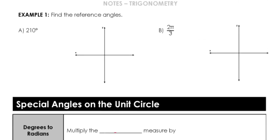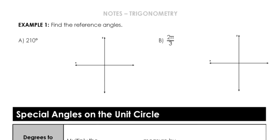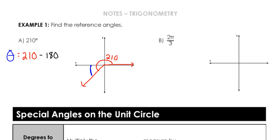Let's practice finding those reference angles. In example one, we find the reference angle for 210 degrees. 210 degrees in standard position starts there, goes past 180 to 210 degrees — there's my initial angle. To find the reference angle, which is how far it is from that negative x-axis, I take the initial angle 210 and subtract the closest one, which is 180 degrees. When I simplify that, I get my reference angle — denoted with a little apostrophe — of 30 degrees.